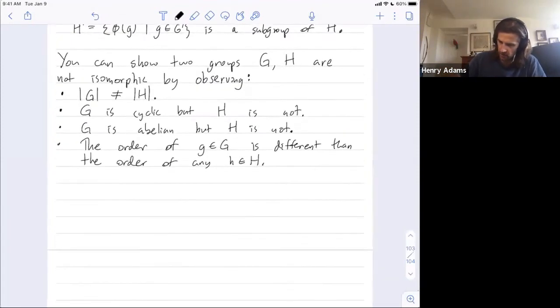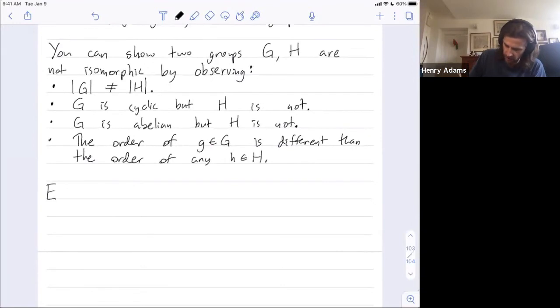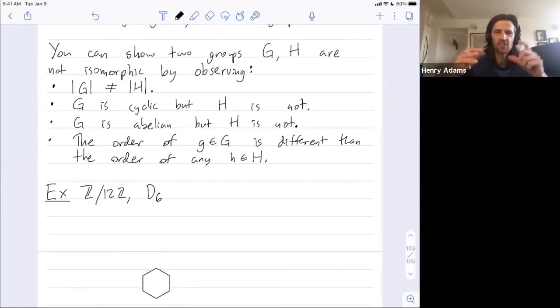Let me do an example. I'm not going to go into all the details, but just to give you an idea: Z mod 12, so the numbers from 0 up to 11 added modular 12; D6 - D6 is the group of symmetries, rotations and reflections of the regular hexagon - so all six rotations and all six flips.